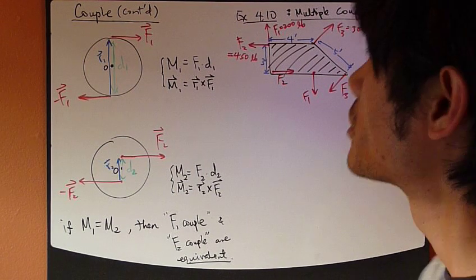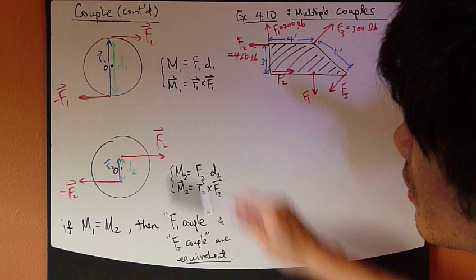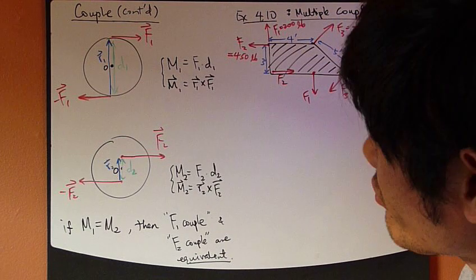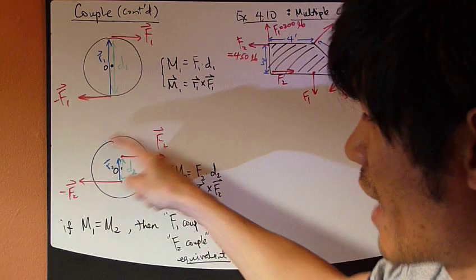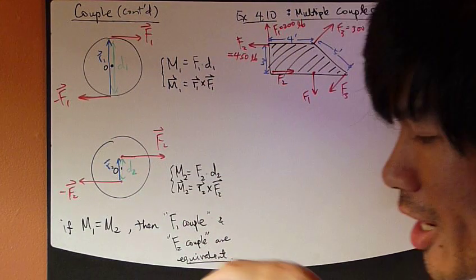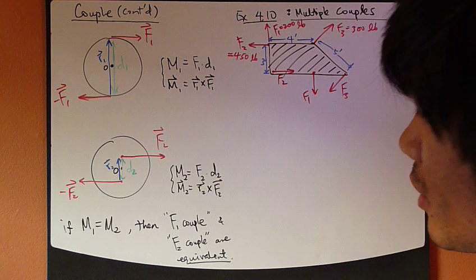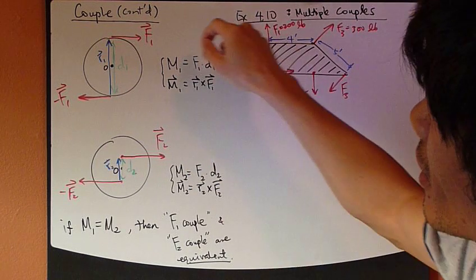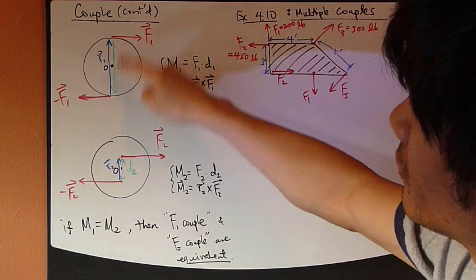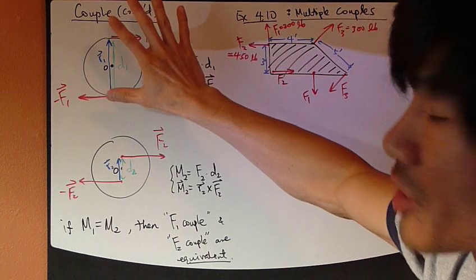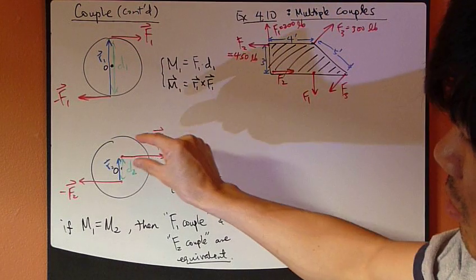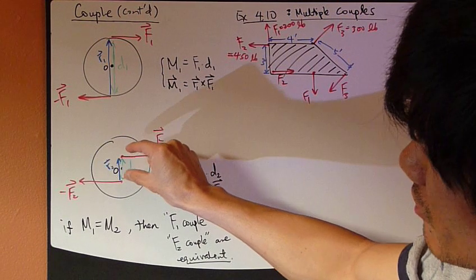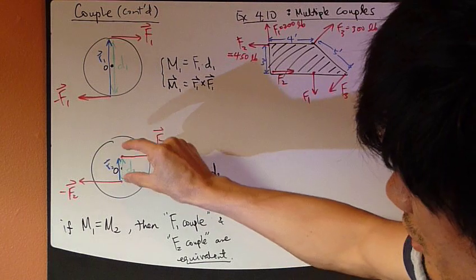Okay, so let's continue with couple discussions. Consider these two cases, that same rigid body, let's say again like a door or steering wheel. Now you apply a couple at this top and bottom position for the first case. The second case, you apply at a slightly different position, further toward the center.